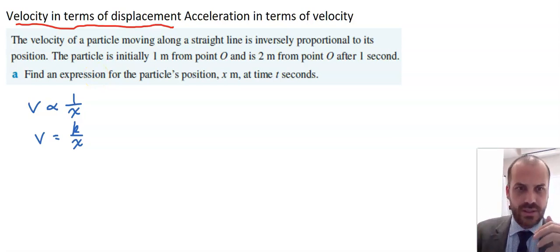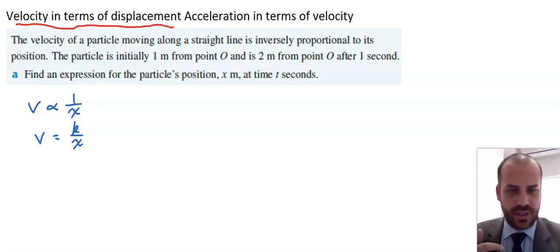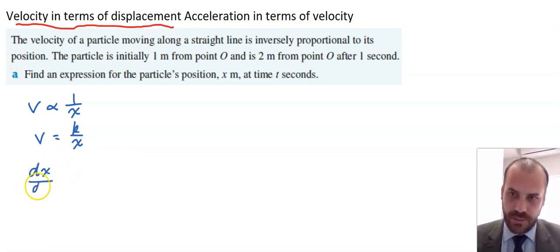You should know that this is a differential equation. It's the same as what you've done in the past. Now, velocity, remember, is the rate of change of displacement with respect to time. So what we have is dx/dt equals k over x. And from here, it's just solving a differential equation.